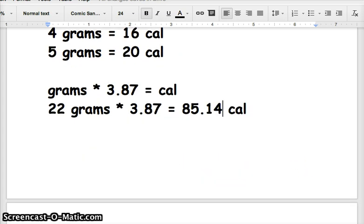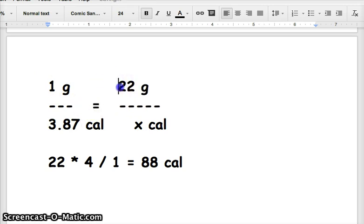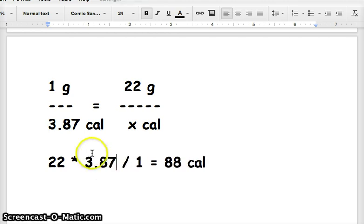And similarly in our proportion, if we knew that it was really 3.87 calories in one gram, we could adjust everything so that we set it up like that. And again we cross multiply catty corner across the equals sign, so 22 times 3.87 divided by 1, that part hasn't changed, and we would get the same result because we're doing the same operation—we're multiplying by 3.87.